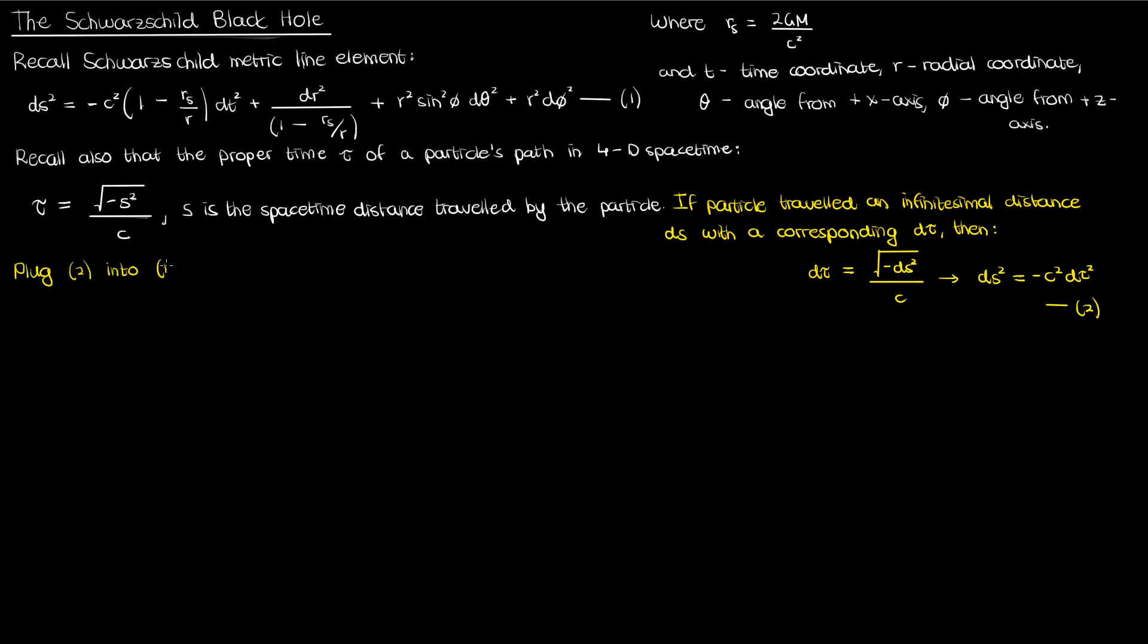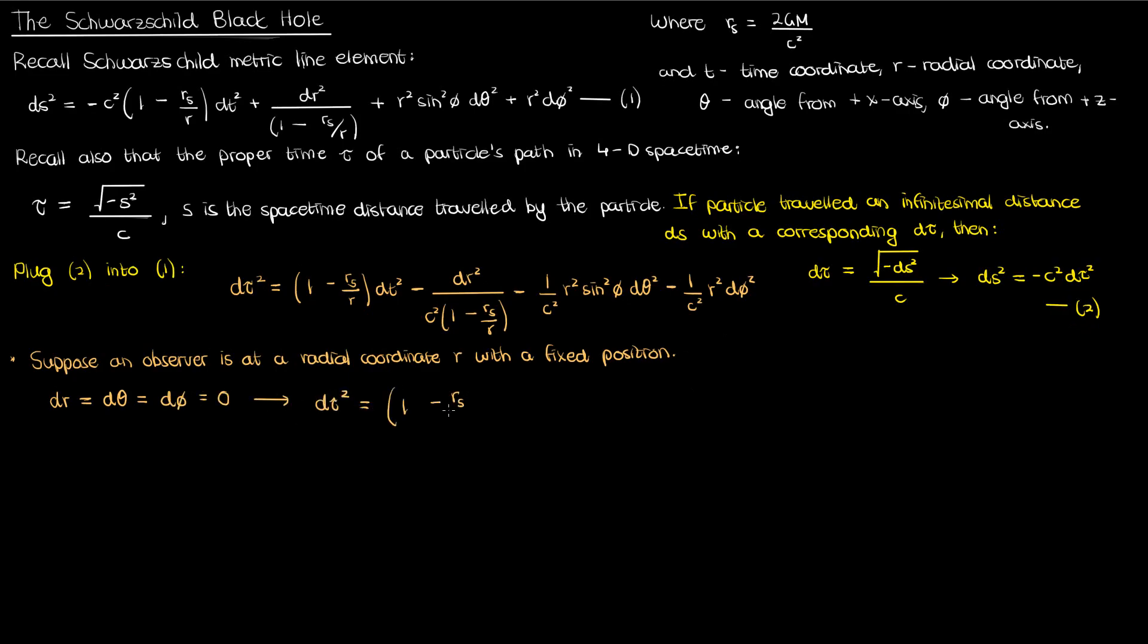I'll now substitute equation 2 into equation 1 to get an expression for the proper time interval d tau in my Schwarzschild geometry. Okay, now let's say that I have an observer who is sitting at a radial coordinate r and with a fixed position in my Schwarzschild geometry. Since the position of my observer is fixed, the dr, d theta, and d phi are all 0. This means that the proper time experienced by my fixed observer is related to dt by the following. I'll call this equation 3.